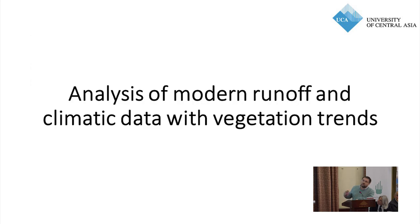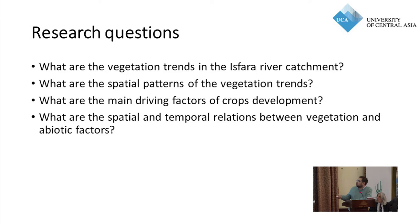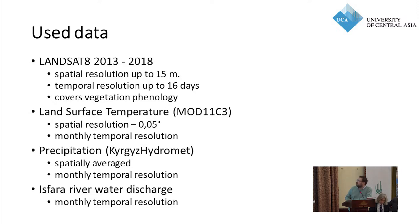The second part of the study analyzes modern data. Before, we used historical Soviet-era data from 1933 to 1991; now we look at the modern situation. We used free Landsat satellite images from 2013 to 2018 with spatial resolution enhanced to 15 meters. We also used land surface temperature at one-twentieth of a degree spatial resolution, plus precipitation data from Kyrgyz Hydromet and Isfara River water discharge from the water console.